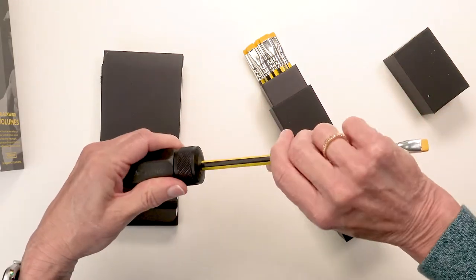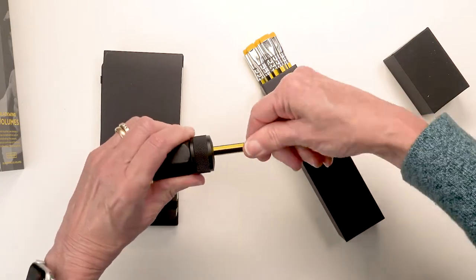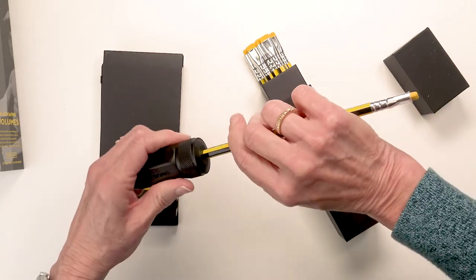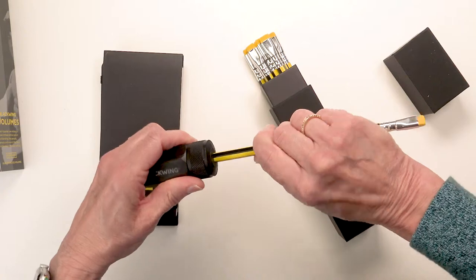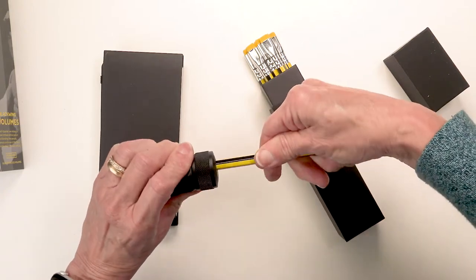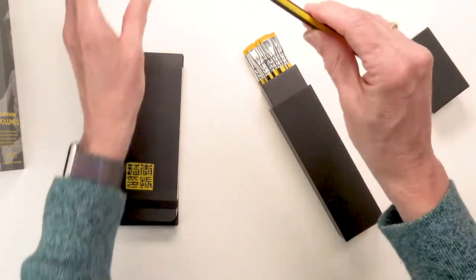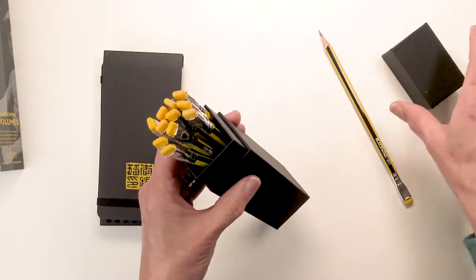What's nice about this sharpener is that it sharpens to a beautiful point in one step. It has a curved blade on the inside. It's really subtle and wonderful. Just like that. Makes a beautiful point. Alright, this is my pencil now. And happily, I have 11 more in the box.